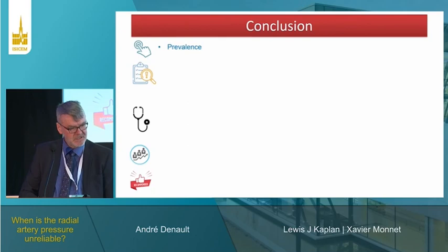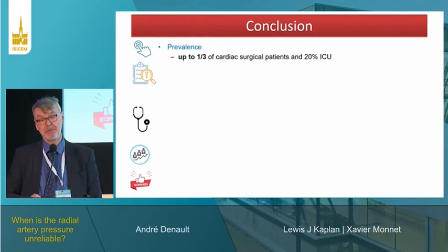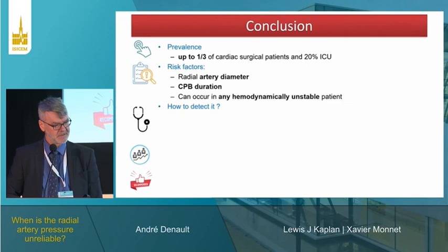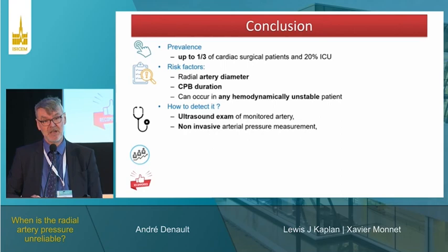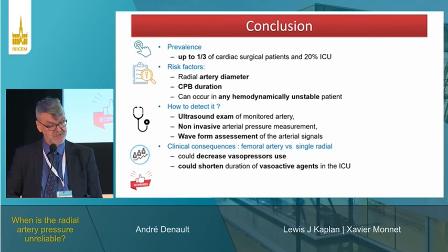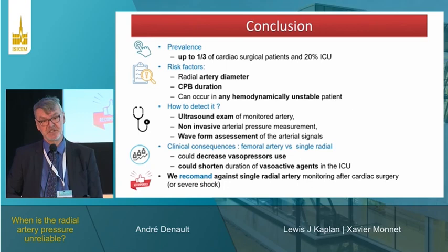In conclusion, gradients are present in one-third of cardiac surgical patients and probably up to 20% of ICU patients on vasoactive agents. Risk factors include small radial artery diameter and bypass duration. Detection methods include ultrasound with 2D and Doppler, non-invasive arterial measurements, and waveform analysis. Using femoral monitoring may decrease vasopressor use and shorten duration of vasoactive agents in the ICU. We recommend against single radial artery pressure monitoring in cardiac surgery and probably for any patient in shock. Thank you.